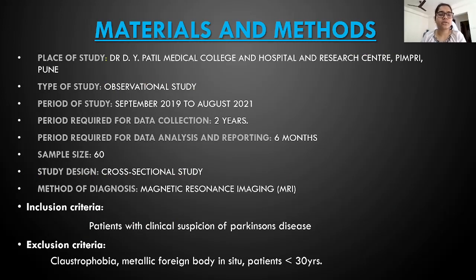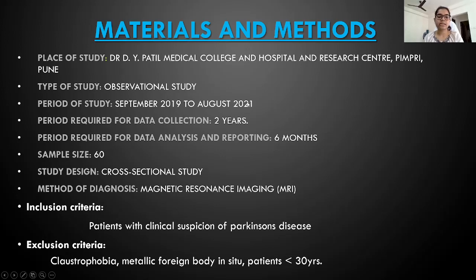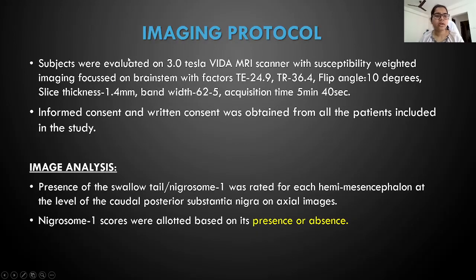Coming to the materials and methods, place of study is Dr. D.Y. Patel Medical College and Hospital, Pimpri, Pune. Type of study is an observational study over a period of two years from September 2019 to August 2021, and method of diagnosis is MRI on a 3 Tesla. Inclusion criteria: patients with clinical suspicion of Parkinson's disease. Exclusion criteria: claustrophobic patients, metallic foreign body in situ, and patients less than the age of 30 years. Subjects were evaluated on a 3 Tesla Vida MRI scanner with susceptibility-weighted imaging focused on the brainstem with TE 24.9, TR 36.4, flip angle 10 degrees, slice thickness 1.4 mm, bandwidth 62.5, acquisition time 5 minutes 40 seconds. Informed written consent was obtained from all patients included in the study.